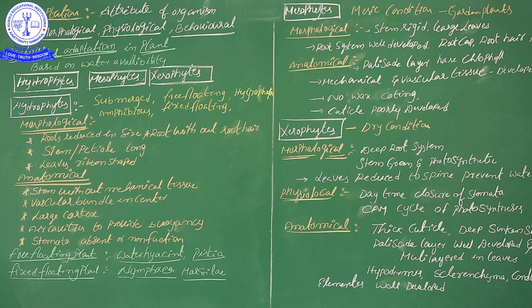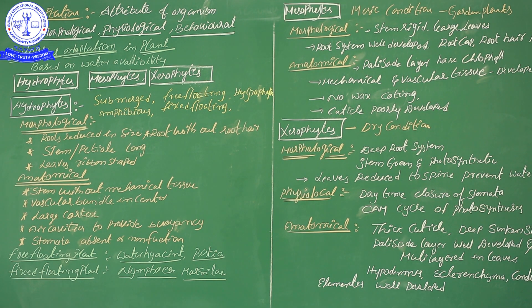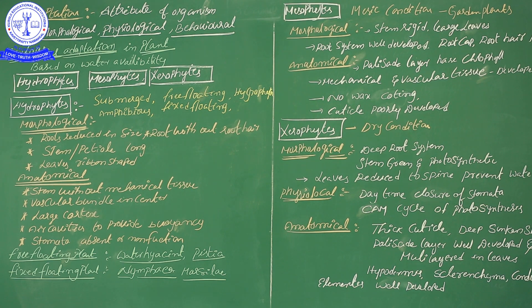Hygroscopic plants grow in moisture-absorbing places. Whether submerged, amphibious, free floating, fixed floating, or hygroscopic — based on which place in water bodies they are growing — these plants exhibit certain morphological adaptations. Morphological characters mean the physical appearance of the plant.